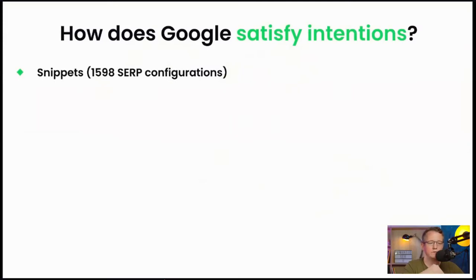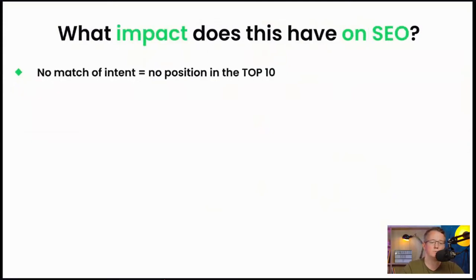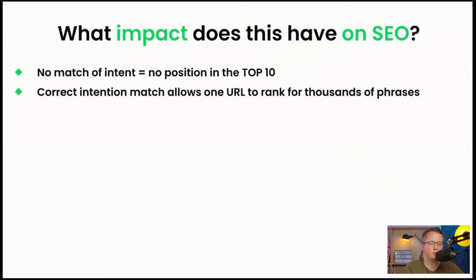How does Google satisfy intentions? First through snippets — there are more than 1,500 SERP configurations in Google right now, including local packs, knowledge graphs, and so on. Also, Google is trying to be an answer engine — for example, if you ask 'how old is Eminem,' Google provides the answer directly in the search results. What impact does this have on SEO? The most important fact is that if you don't match intent, you cannot have a position in the top 10. If you match the intention correctly, you can rank for thousands of keywords for a single URL if those keywords have the same intention.